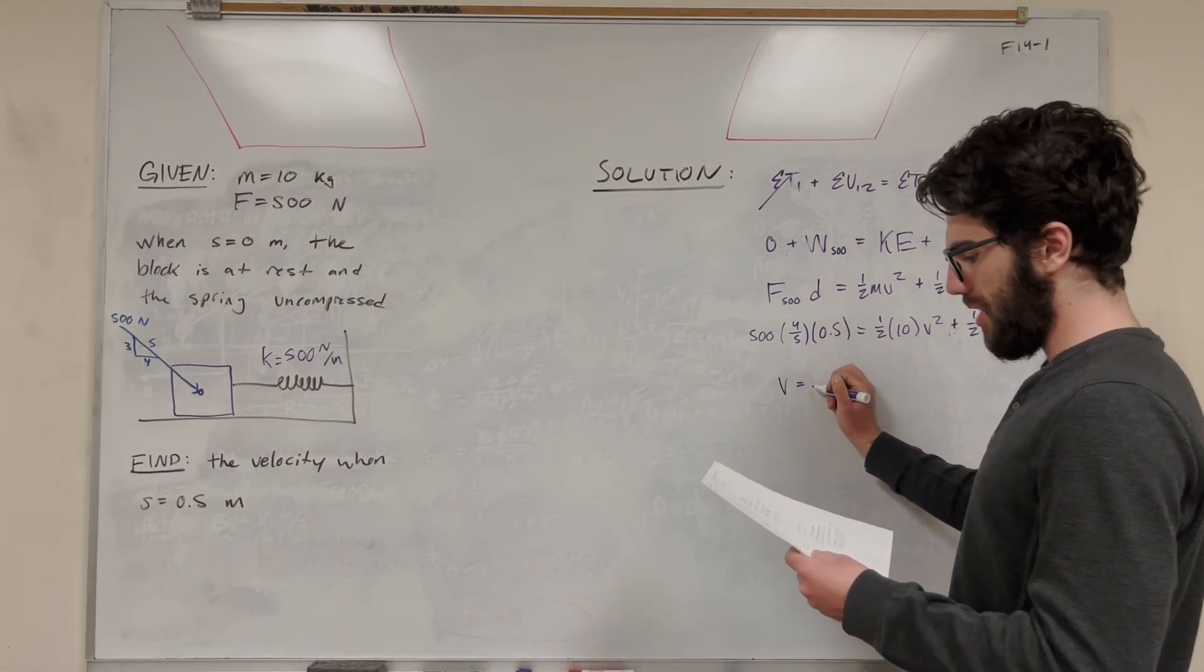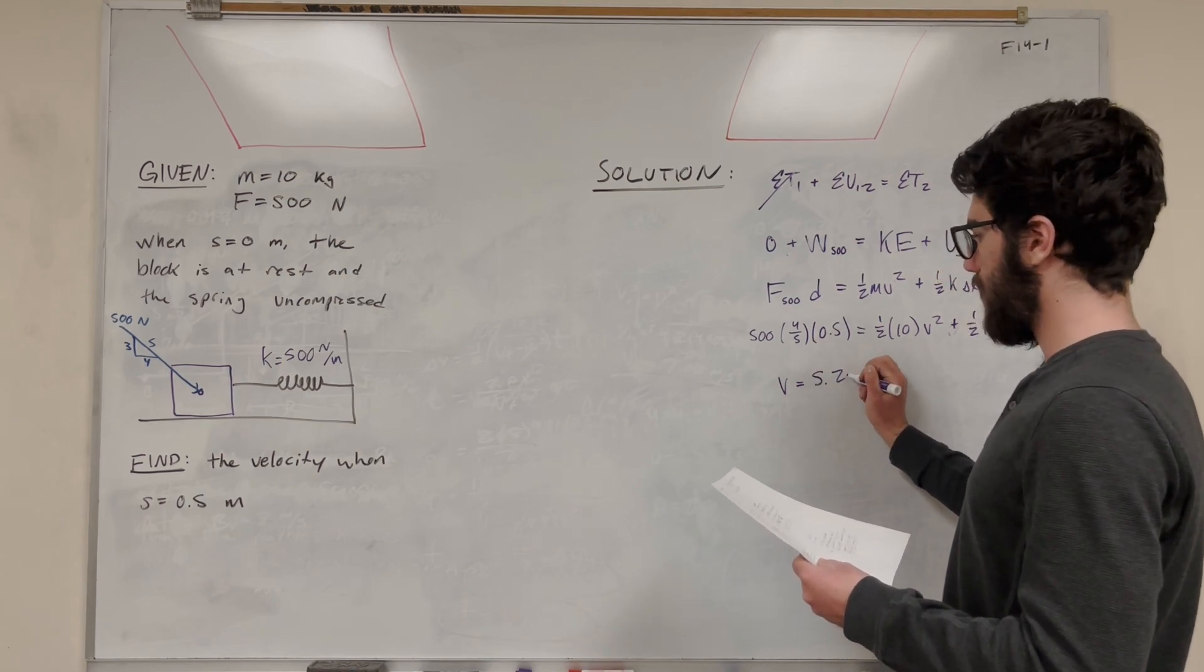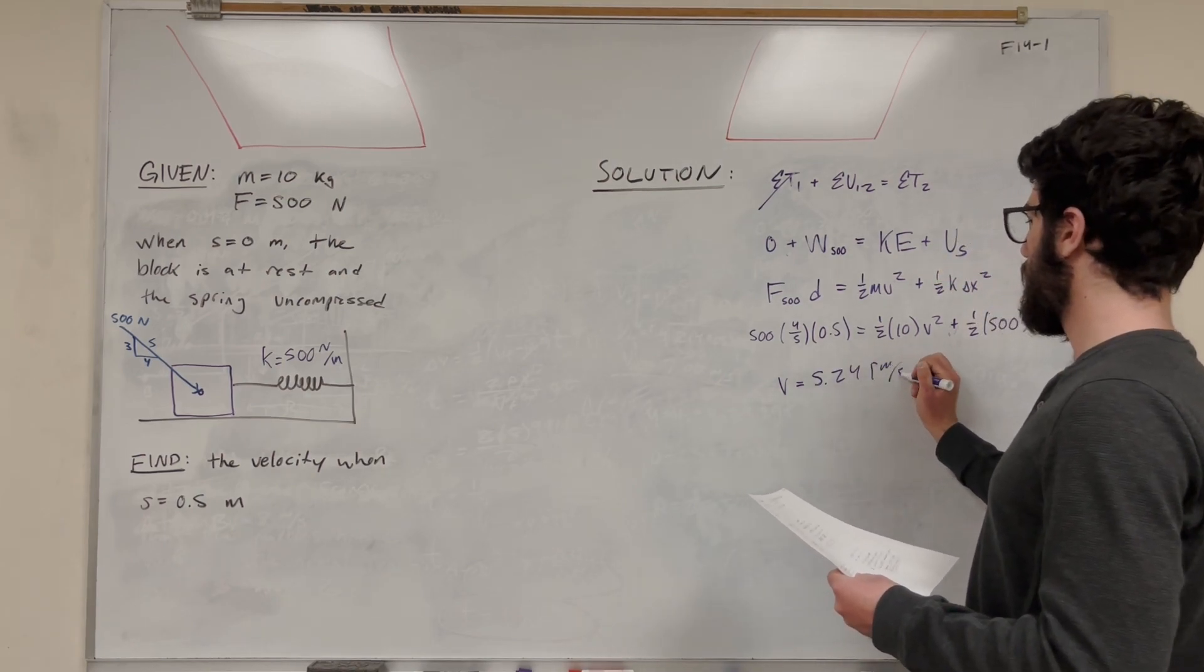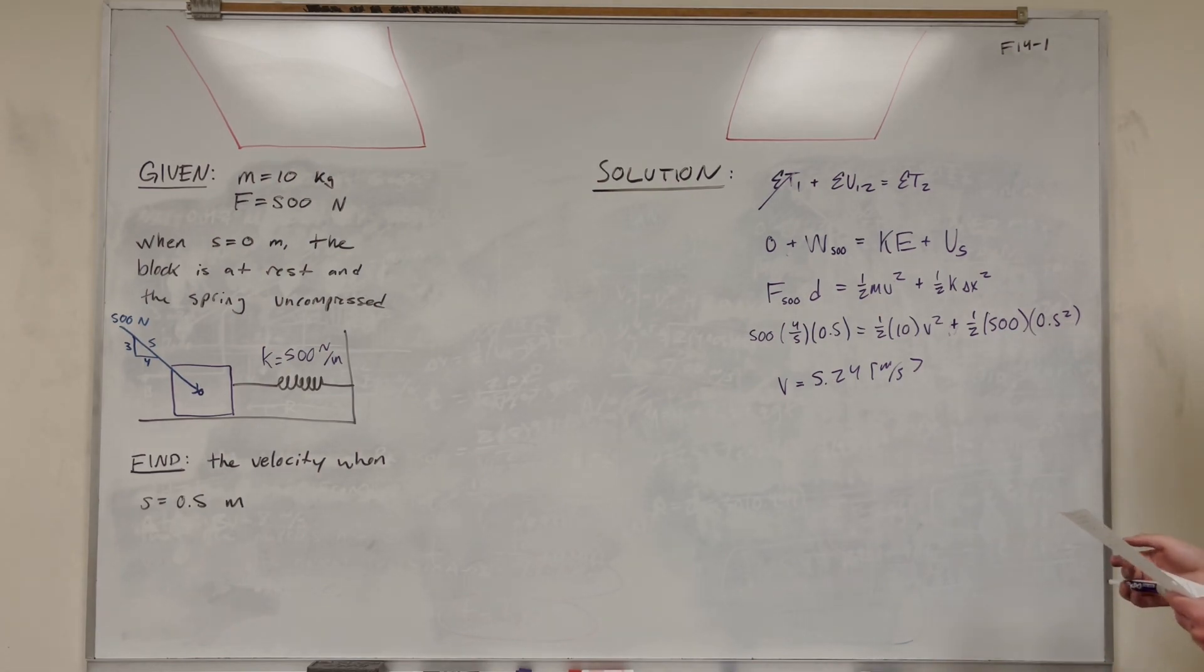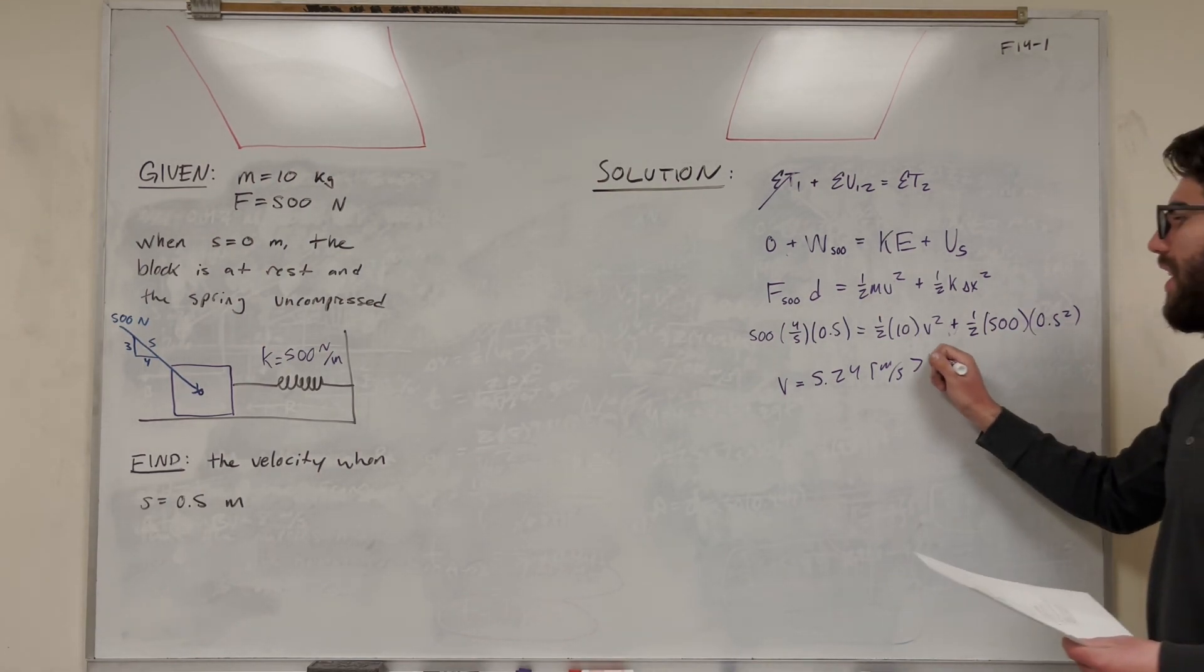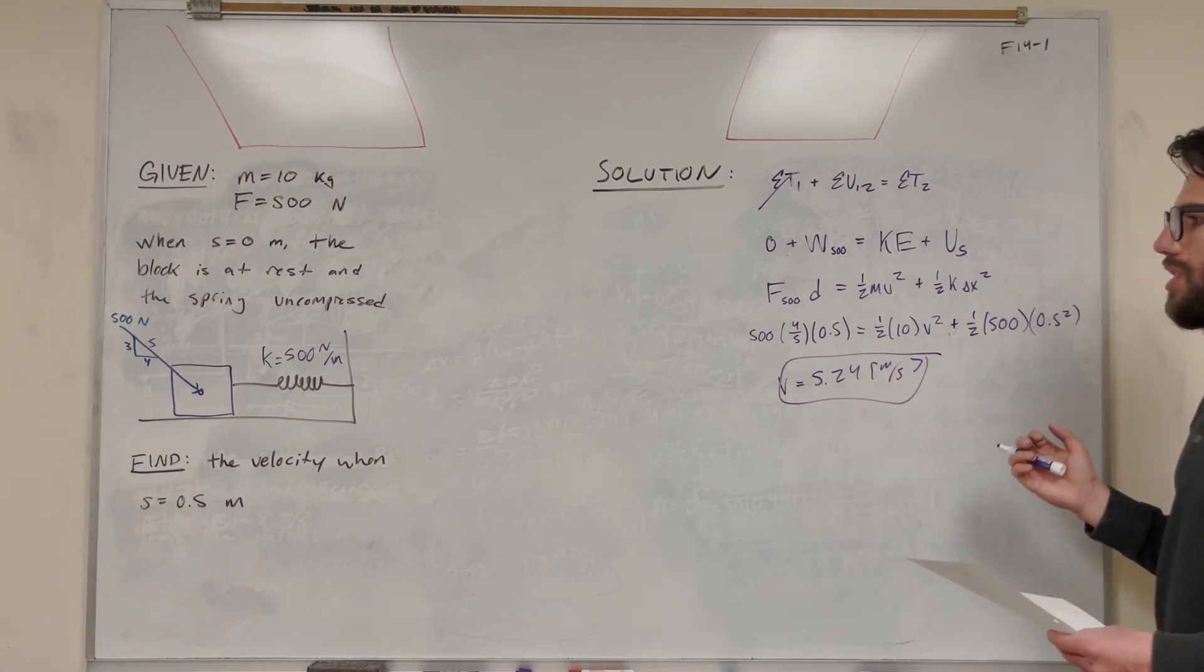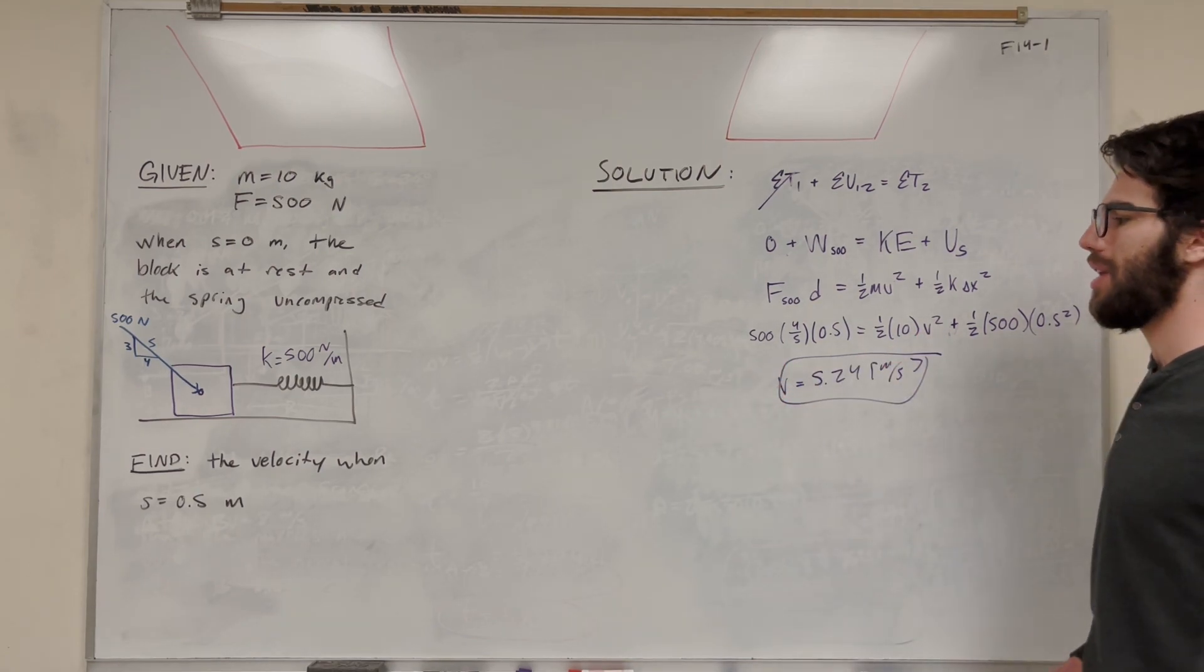But anyway, velocity, I plugged it in already, 5.24 meters a second. I trust that you guys know how to solve this equation from here. Okay, so there we go. That's our final answer. We're going 5.24 meters a second at that point when we compress the spring 0.5 meters.